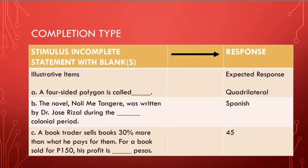For example B, 'Noli Me Tangere was written by Dr. Jose Rizal during the blank colonial period,' and the answer is 'Spanish.' Based on examples A and B, for the completion type we are looking for one specific answer, so it's easy to check. All the learners have to do is provide the answer.